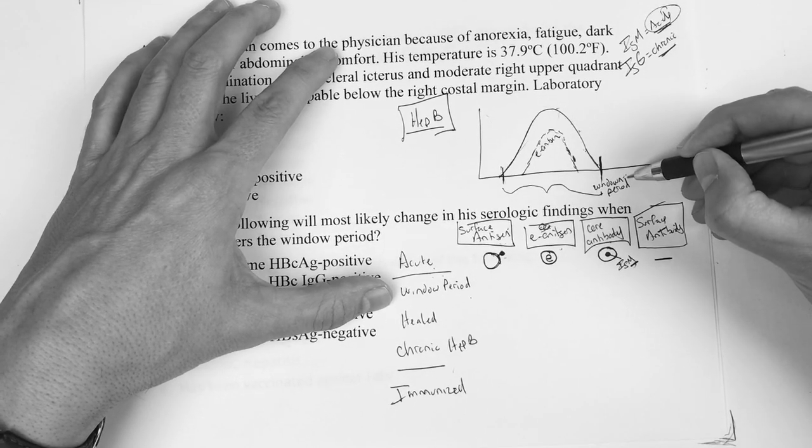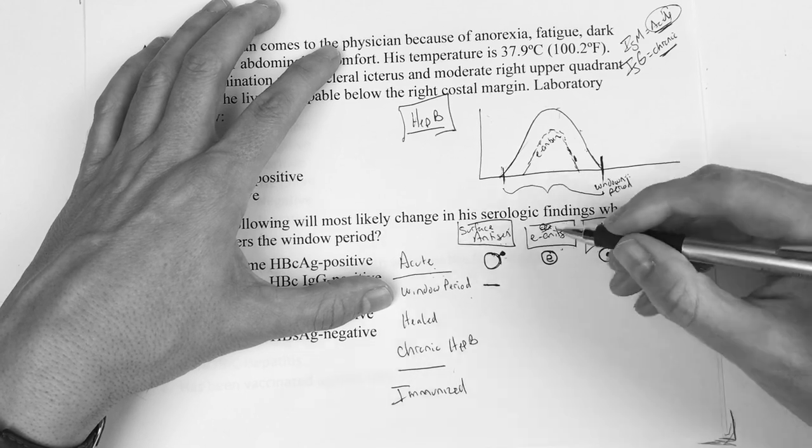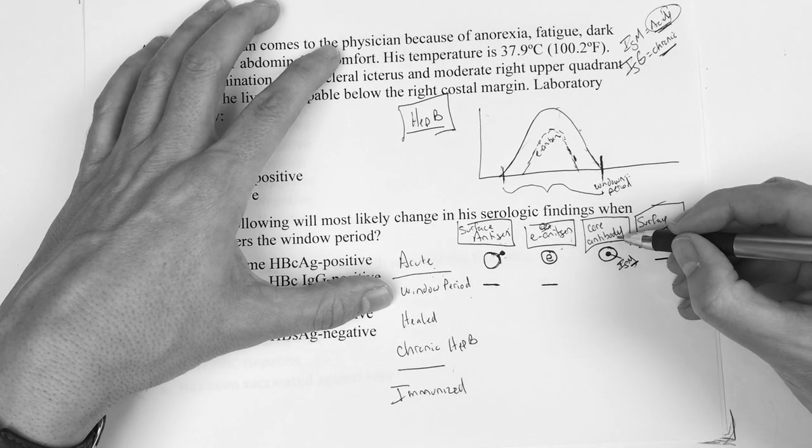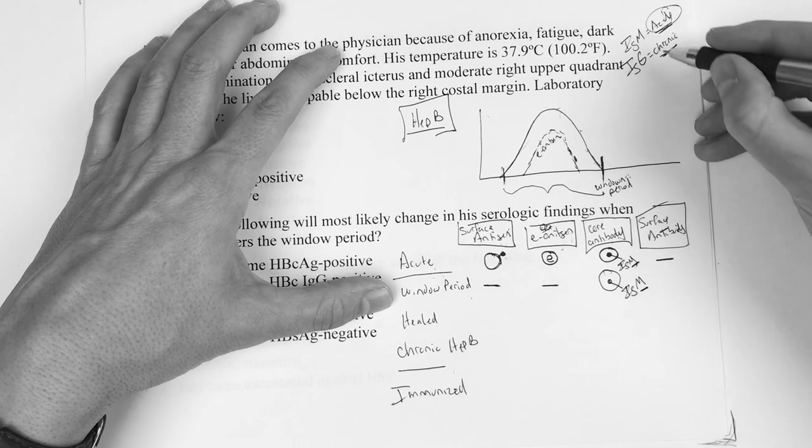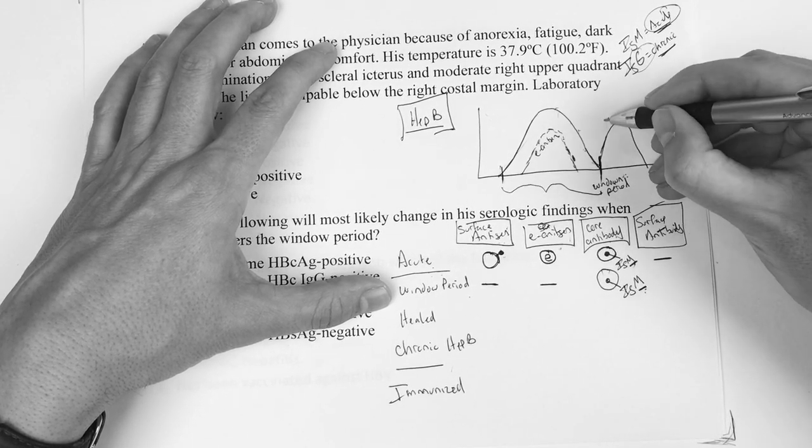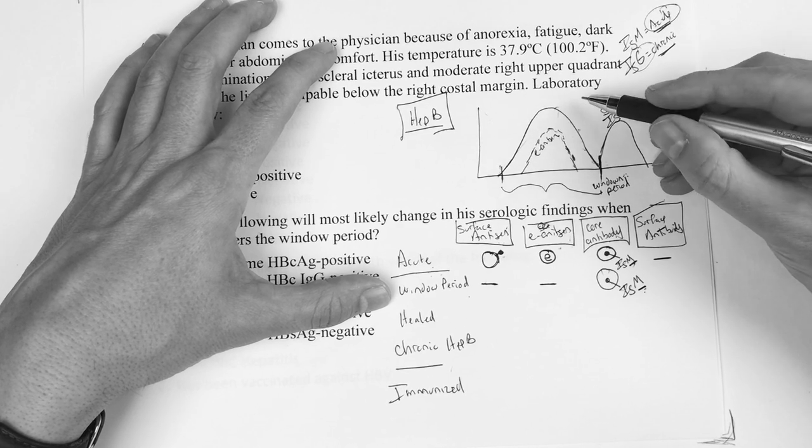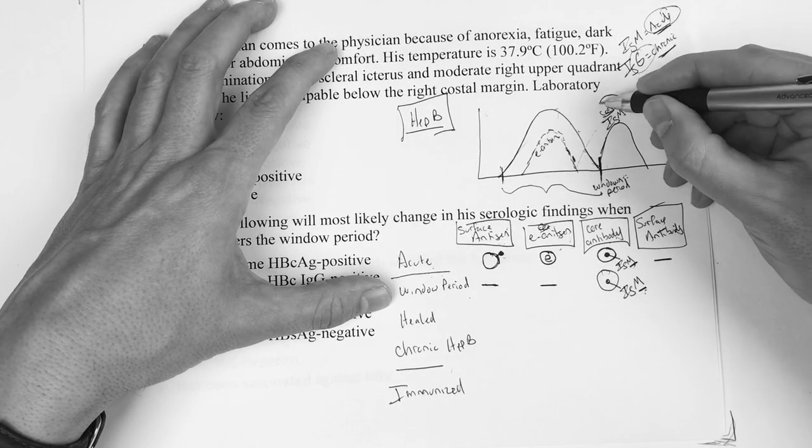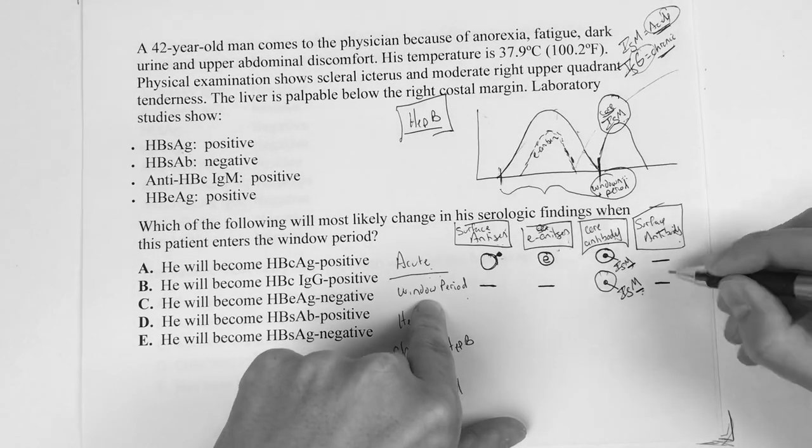As we move into this window period, the surface antigen is gone. The E antigen has been gone a while. The core antibody is the one that's still there, and it's still early on - we haven't had enough time to give us an IgG, so he's still going to be IgM. In the window period, all you see is a core IgM antibody. Is there a surface antibody in the window period? Not yet, hasn't been enough time.